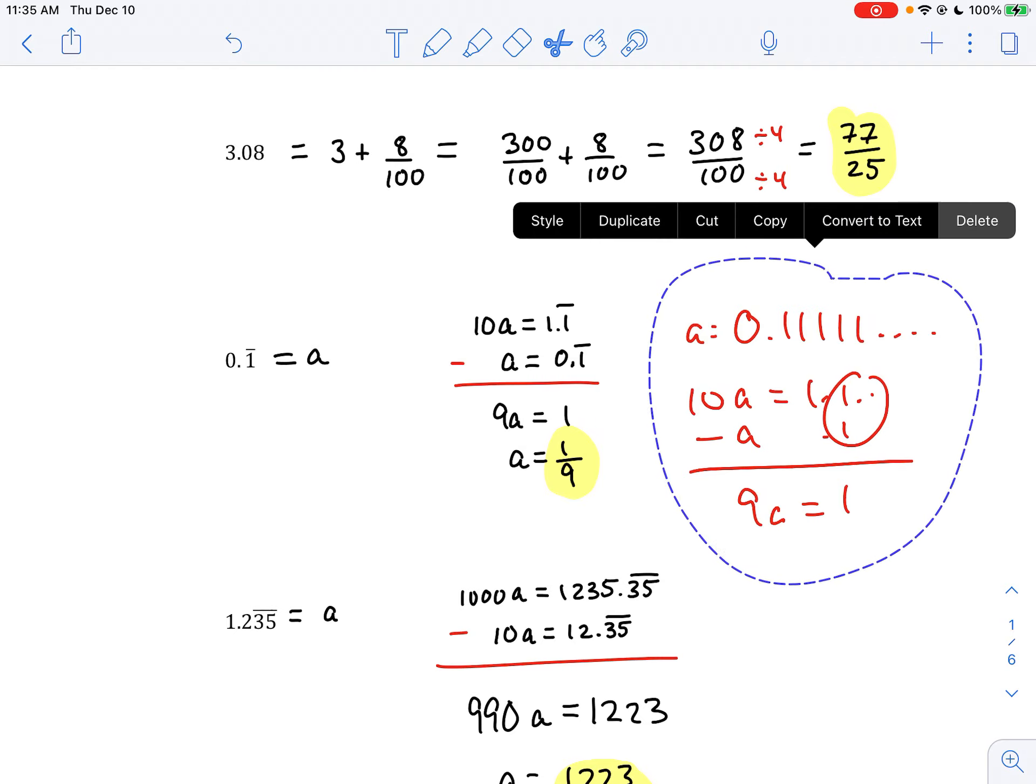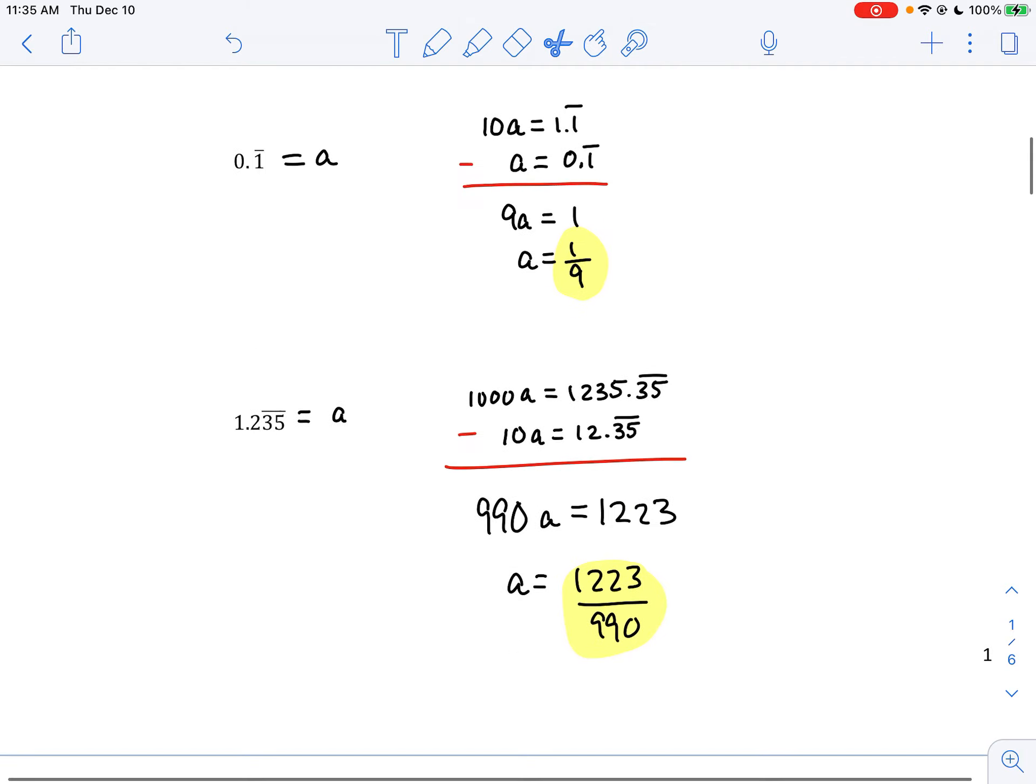Now the issue with this one here that was most common was that people thought the 2 was also part of the repeating component, but it's not. It's the 3, 5 that repeats.